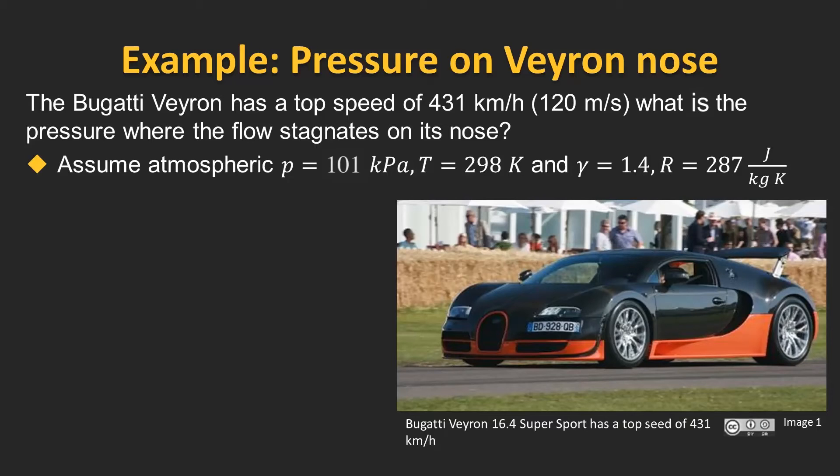Earlier in the course we said that we would be able to properly compute the pressure encountered by the front of a Bugatti Veyron when it stagnates the airflow moving over it once we knew a little bit more about compressible flow theory. The reason we needed to apply some compressible flow theory was that the top speed of this car is fast enough that compressible effects become important.